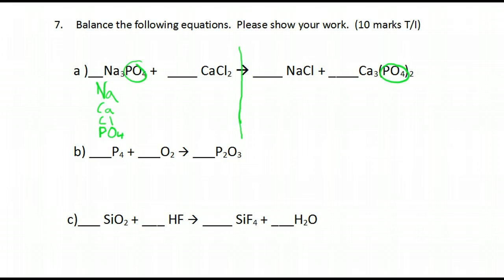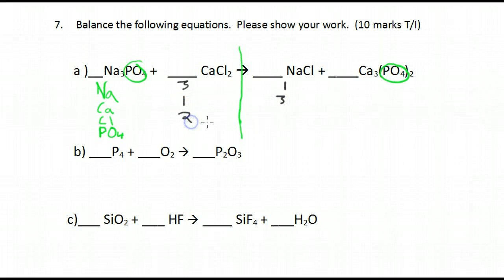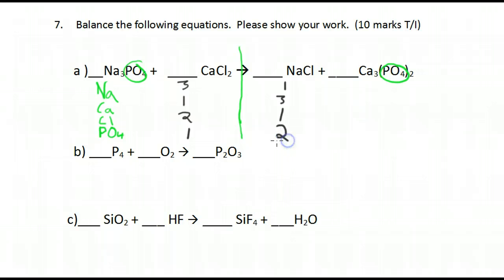Let's start counting. Right now we have three sodium on this side and one sodium on this side, one calcium on this side and three calcium on this side, two chlorines on this side and one chlorine on this side, and one phosphate on one side and two phosphates on the other side.